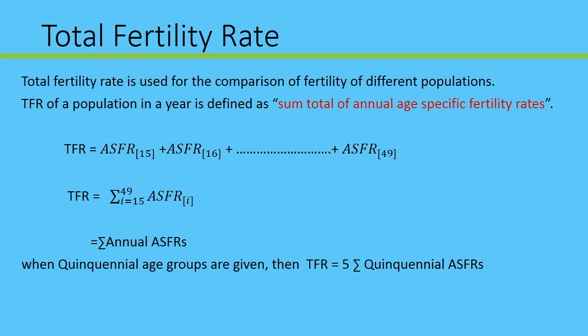So what is the definition for TFR? The total definition for TFR is the sum total of annual age-specific fertility rates, where the childbearing age is from 15 years to 49 years.